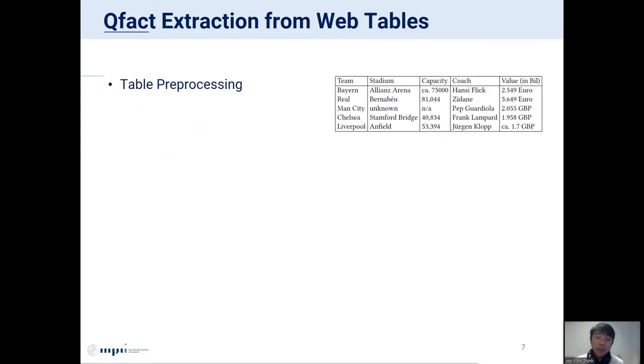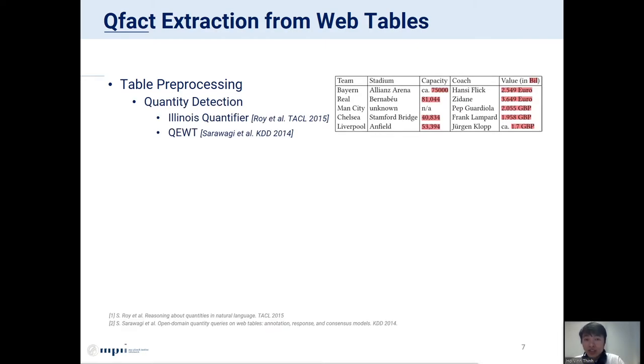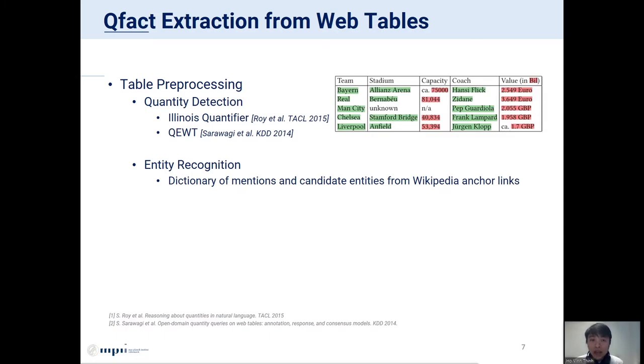With this computational model, our QFact extraction starts with table preprocessing phase, including the following steps. The first step is quantity detection. For this, we make use of two earlier works. The first one is applied to table cells to identify quantity values and units. The second one is applied to column headers to discover additional unit and scaling factor if available. Because these are two separate works, we combine them together using rules. The second step is entity recognition. We identify entity mentions in the table using a dictionary built from Wikipedia anchor links. The dictionary gives us not only the mentions, but also their candidate entities.